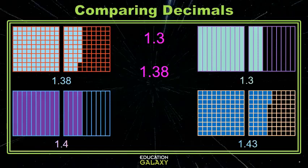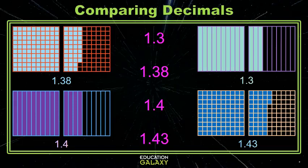Then I just have one and four tenths and one and forty-three hundredths. Well, one and four tenths is just one and forty-hundredths, so that one comes next. And then the largest is one and forty-three hundredths. There you have it, ordering decimals.